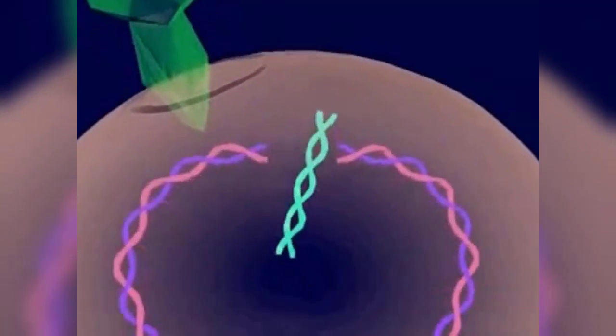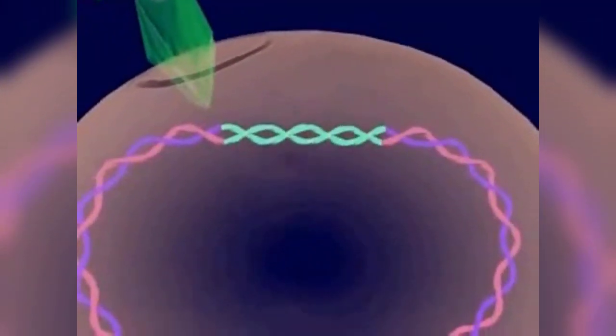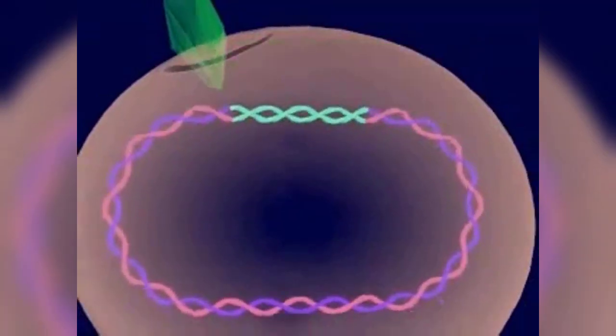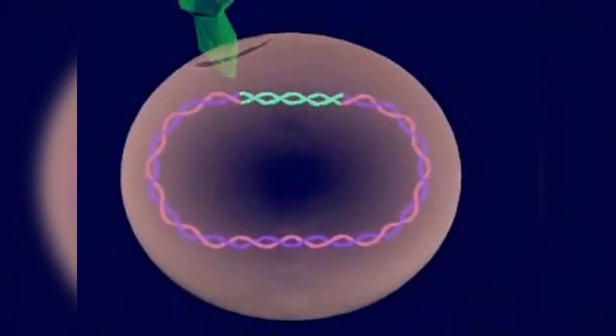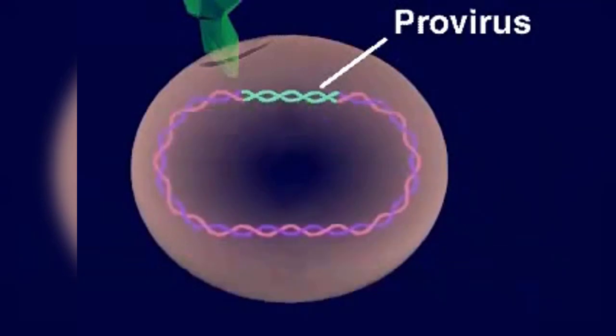Once inside the cell, the viral DNA inserts itself into a specific site in the chromosome of the host cell. Viral DNA is then called a provirus.